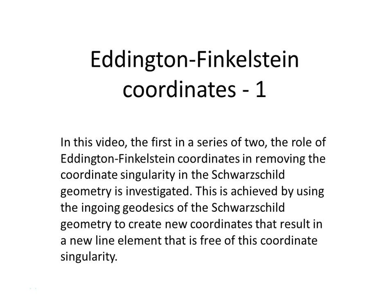In this video, the first in a series of two, the role of Eddington-Finkelstein coordinates in removing the coordinate singularity in the Schwarzschild geometry is investigated. This is achieved by using the ingoing geodesics of the Schwarzschild geometry to create new coordinates that result in a new line element that is free of this coordinate singularity.